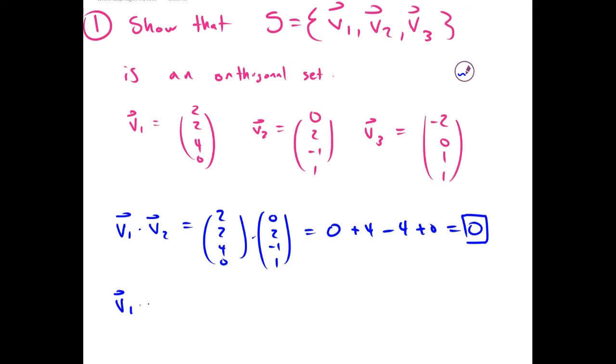Now we can show that V1 and V3 are orthogonal by taking their dot product. And we get negative 4, 0, 4, and 0, which adds up to 0.